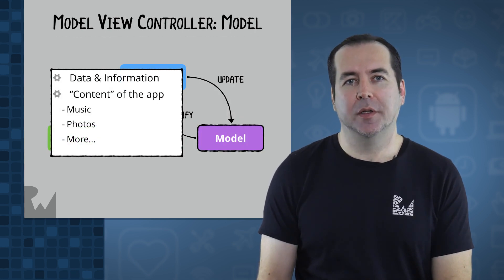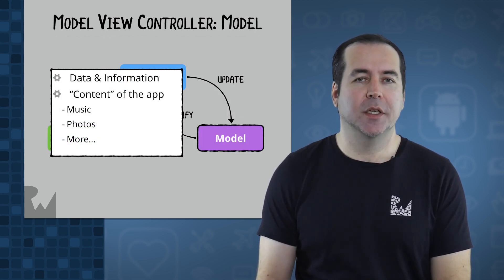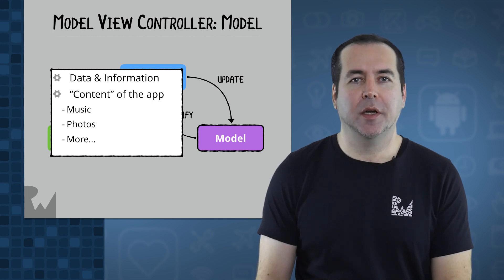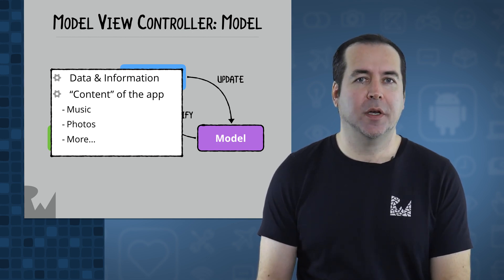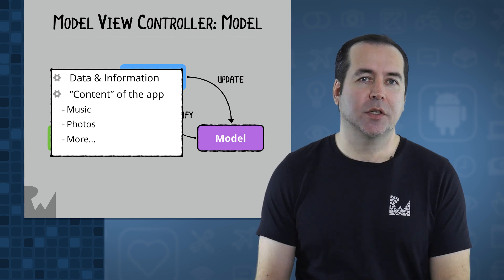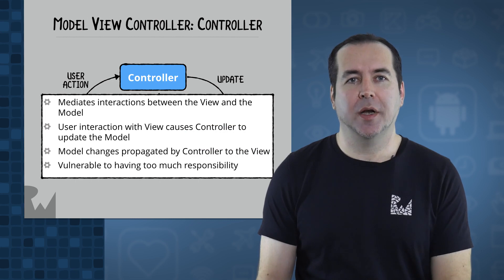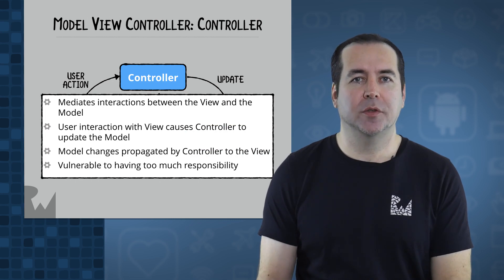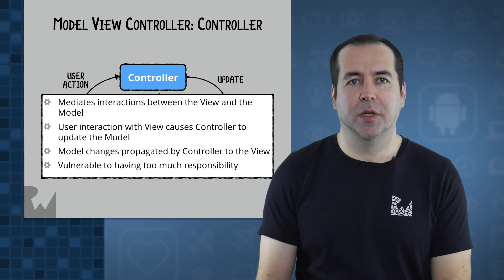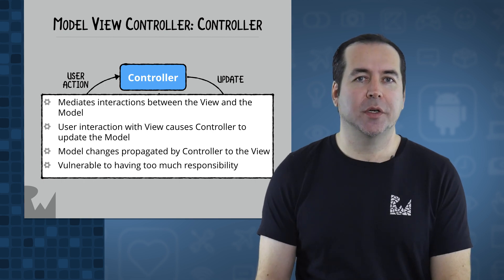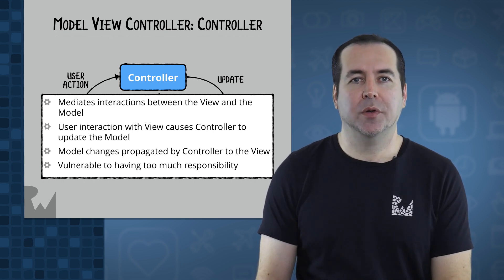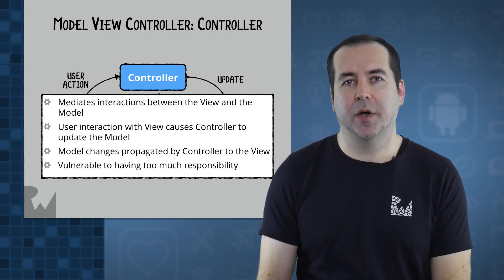You can think of the model layer as the data or information in the software. The model layer contains classes for creating the objects that form the content of your app, such as songs in a music app or photos in a photo app. The controller mediates interactions between the view and the model. The view shows app data to a user, and when the user interacts with the app, the controller then updates the app data in some way.